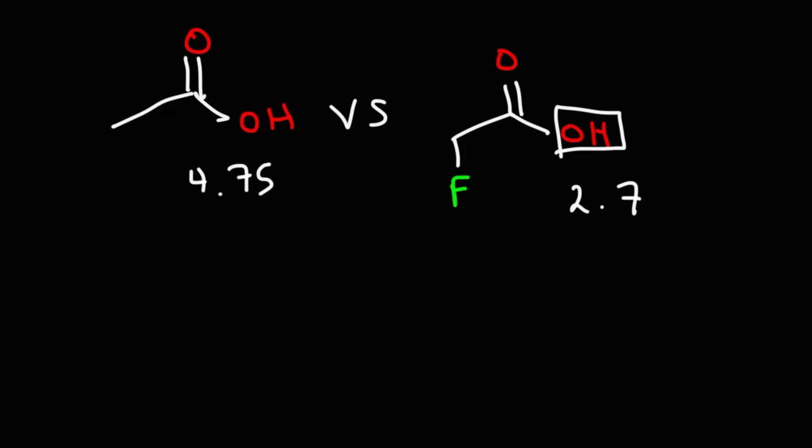Fluorine is an electronegative atom. It really wants electrons, and so it pulls electrons toward itself. This inductive effect of fluorine, its ability to pull electrons through the sigma bond, causes this acid to become more acidic.